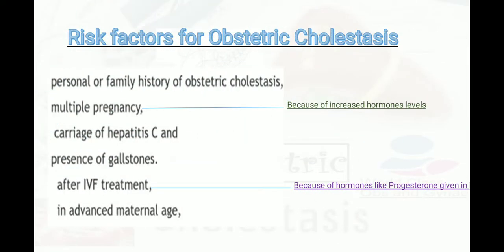Risk factors for obstetric cholestasis include personal and family history of obstetric cholestasis, multiple pregnancies — due to increased hormone levels, as pregnancy hormones are responsible for obstetric cholestasis in the pathophysiology — carriage of hepatitis C, presence of gallstones, IVF treatment (because hormones like progesterone are given), and advanced maternal age.